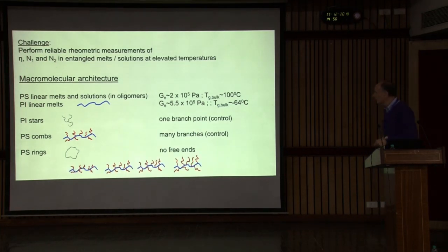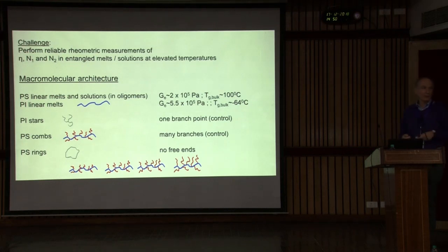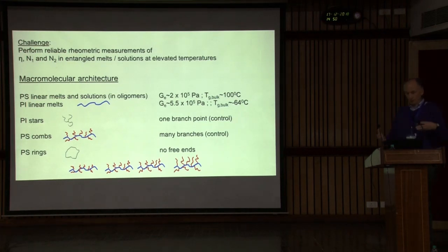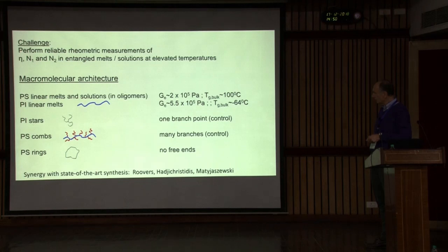The way we approach the problem is that we design systems with well-defined characteristics. For example, we use combs which have the same linear backbone molecular weight, the same number of branches, but varying branch molecular weight. In this way, you can control how the molecular parameters affect the rheology. This is done in collaboration with chemists — in our case, Roovers, Hadjichristidis, and Matyjaszewski.